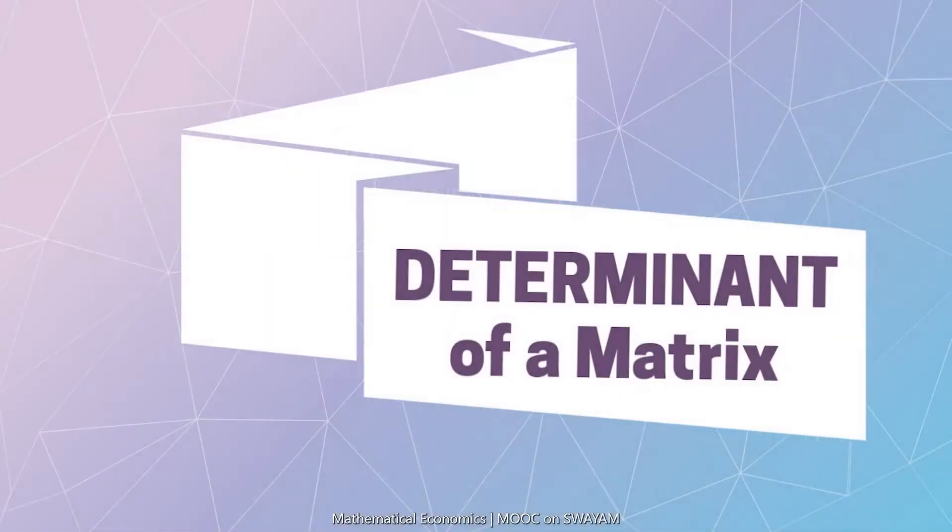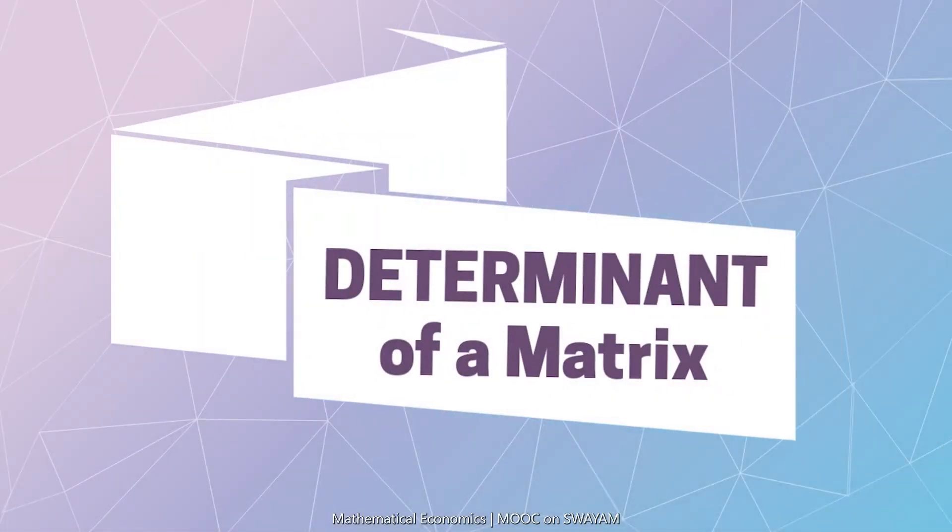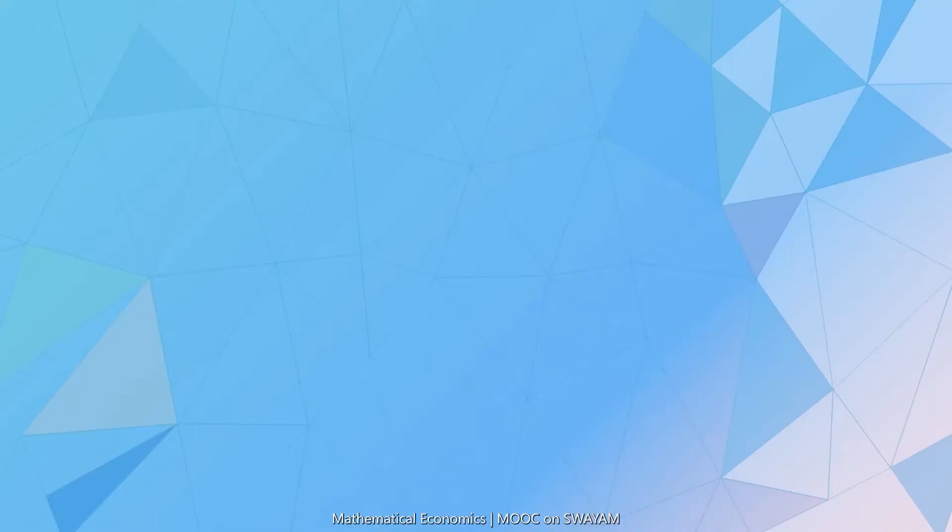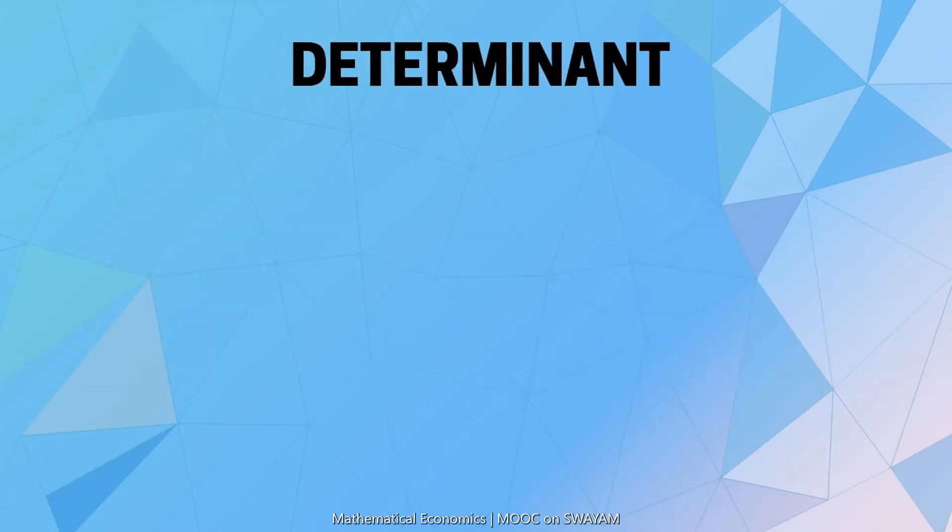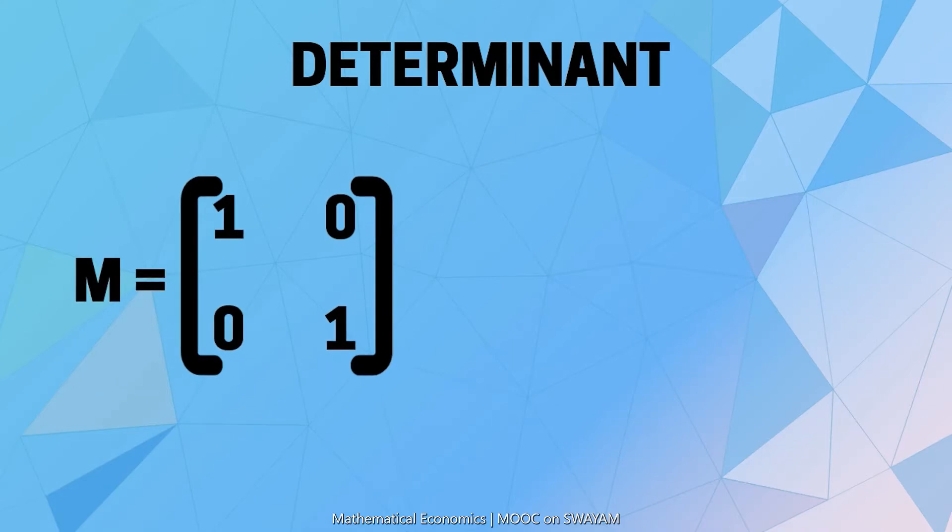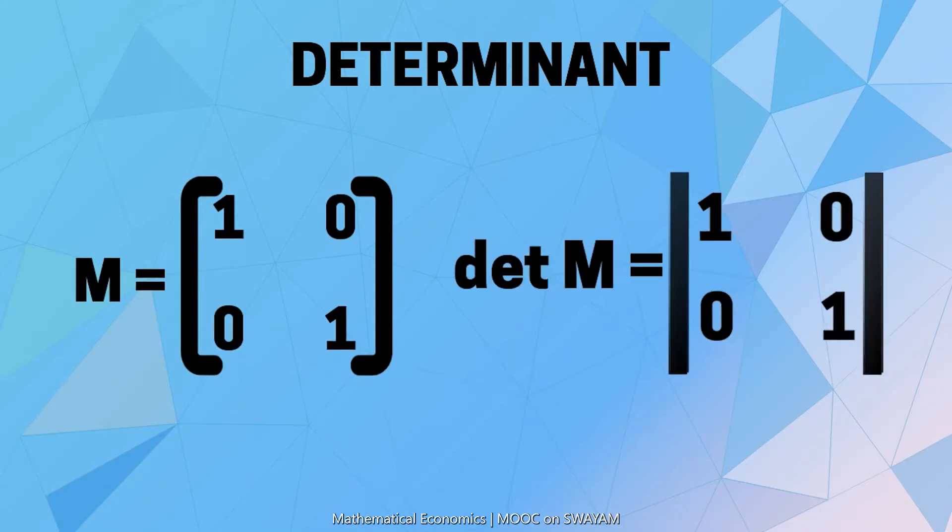The term determinant means something that determines. In mathematical language, determinant denotes the volume enclosed by the rows of a matrix. The determinant of a matrix M is denoted by two straight lines or DET of M.